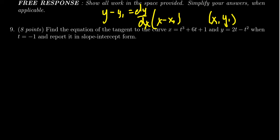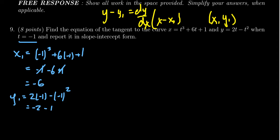So when you take t equals negative 1, x1 will equal negative 1 cubed plus 6 times negative 1 plus 1. Simplifying that we get negative 1 minus 6 plus 1. The ones cancel out and we're left with negative 6 for the x-coordinate. And then for the y-coordinate y1 we plug in negative 1. We're gonna get 2 times negative 1 minus negative 1 squared. So we get negative 2 minus 1 which is negative 3. And so now we have our point negative 6 comma negative 3. This is the point of tangency that we're gonna need.